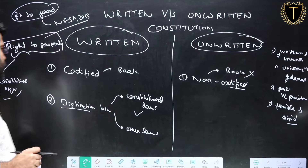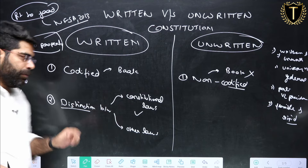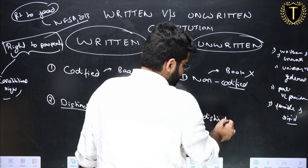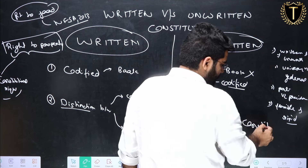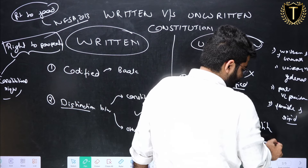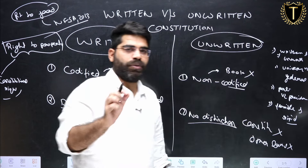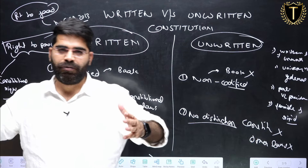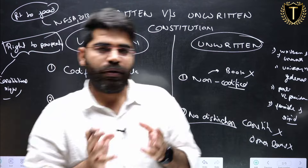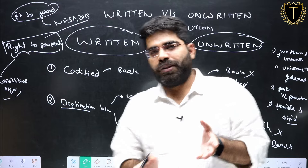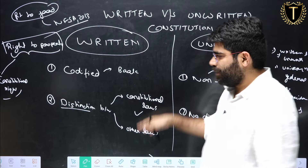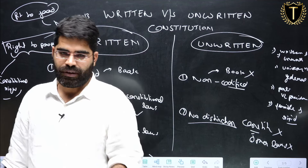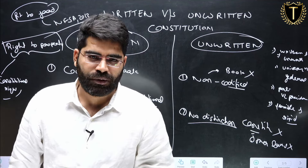There is a clear segregation between constitutional law and other laws in a written constitution. But in an unwritten constitution there is no such distinction, because every law is a part of the constitution. When you merge every law together, you make the constitution of the country, and that constitution is unwritten in nature. So there is no difference between constitutional law and other law in the case of an unwritten constitution.